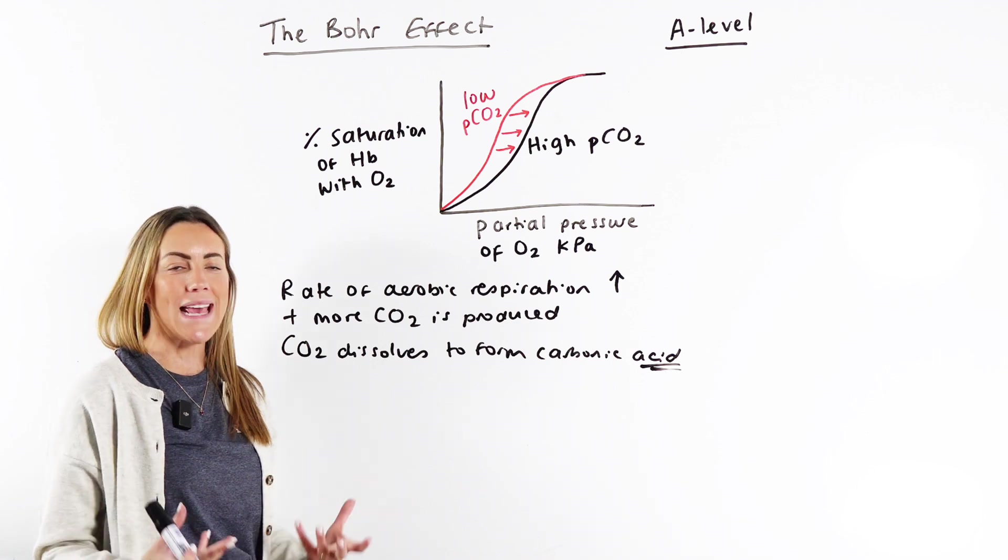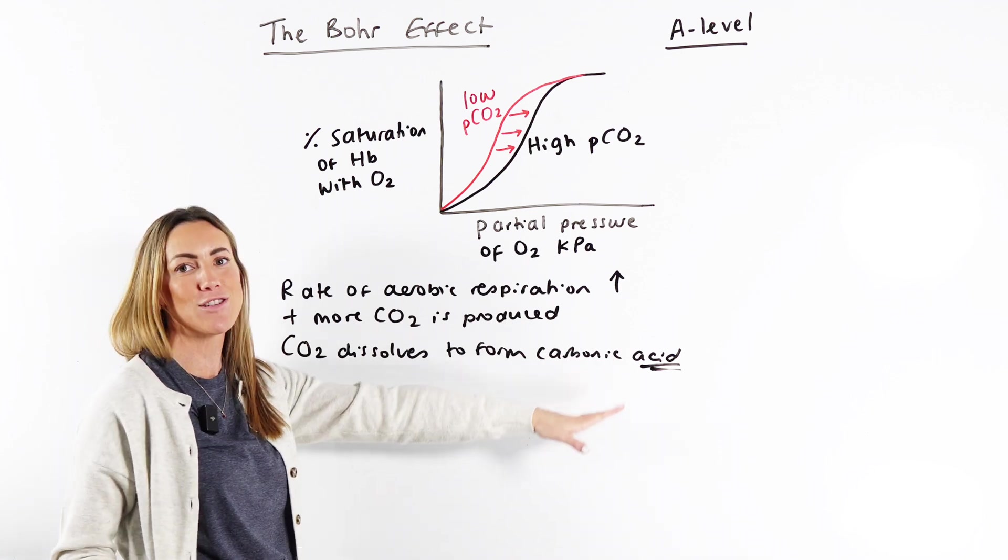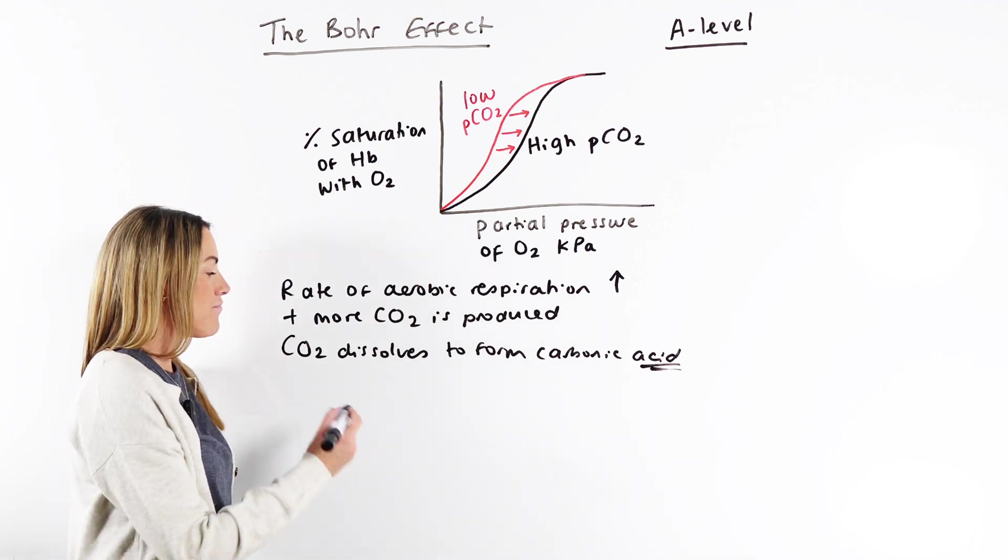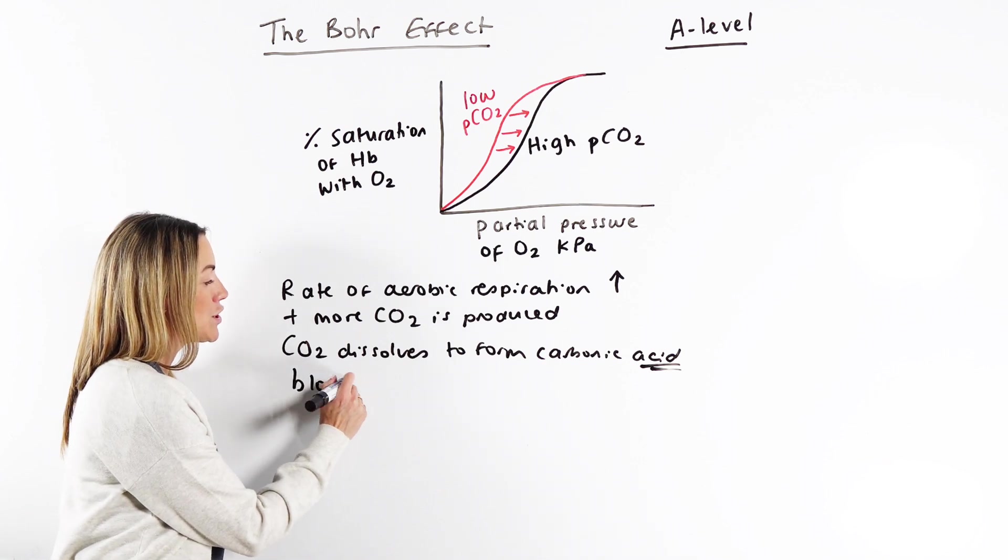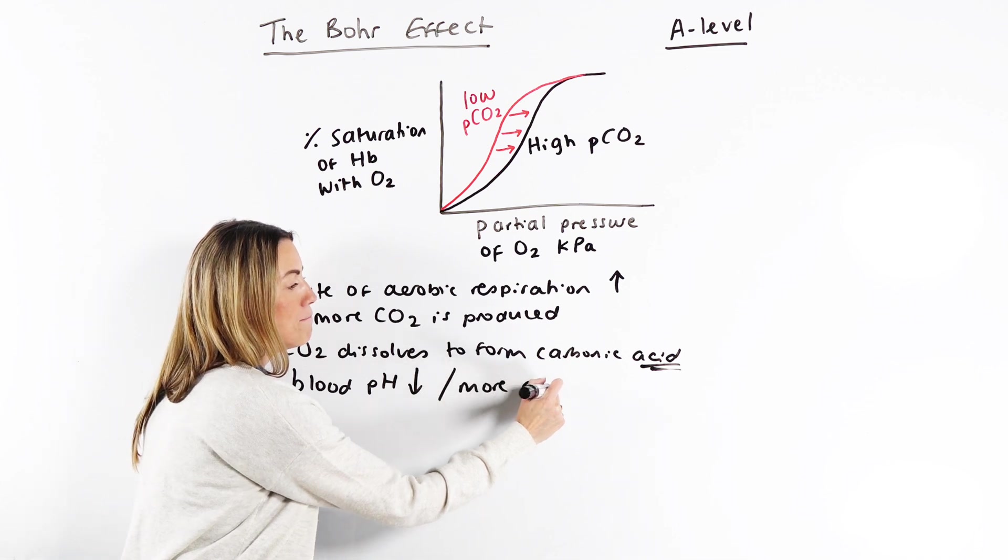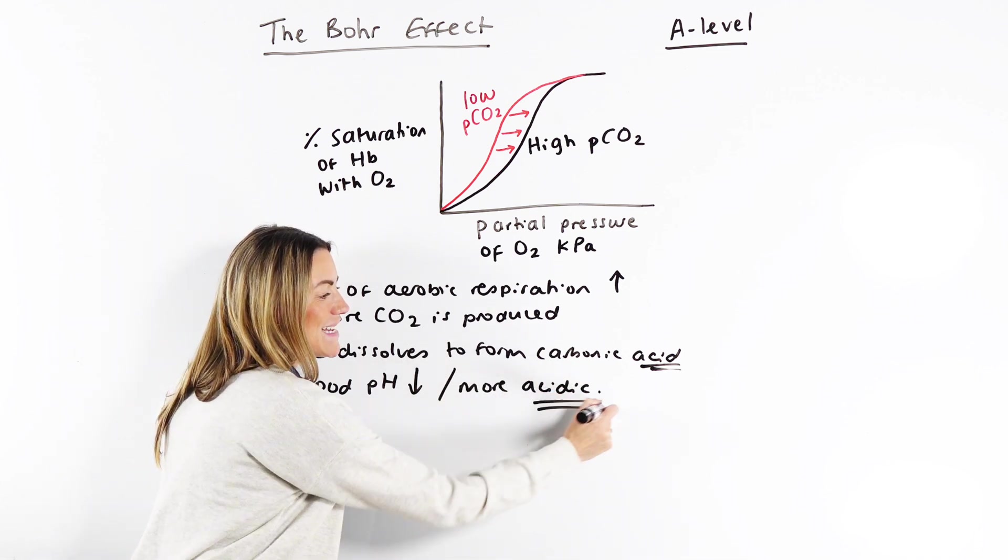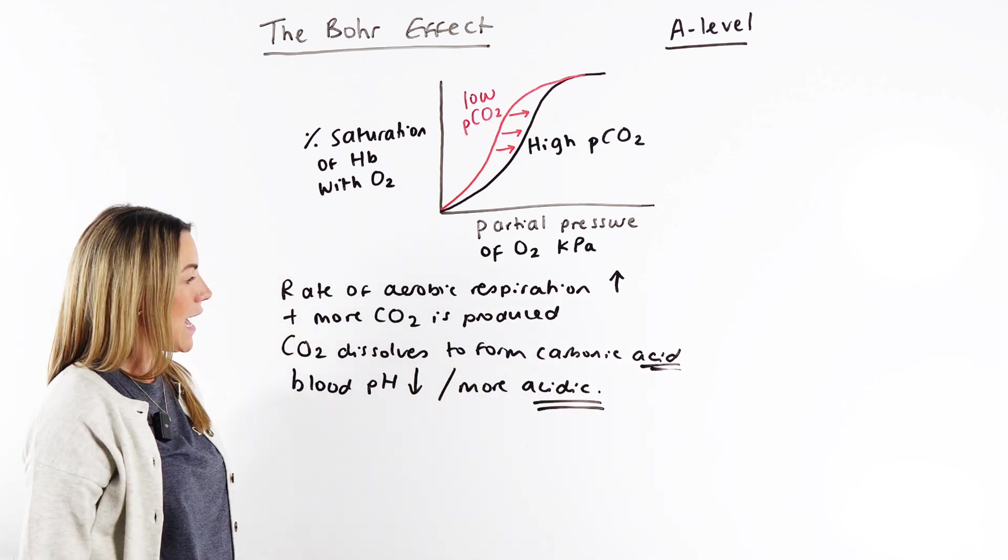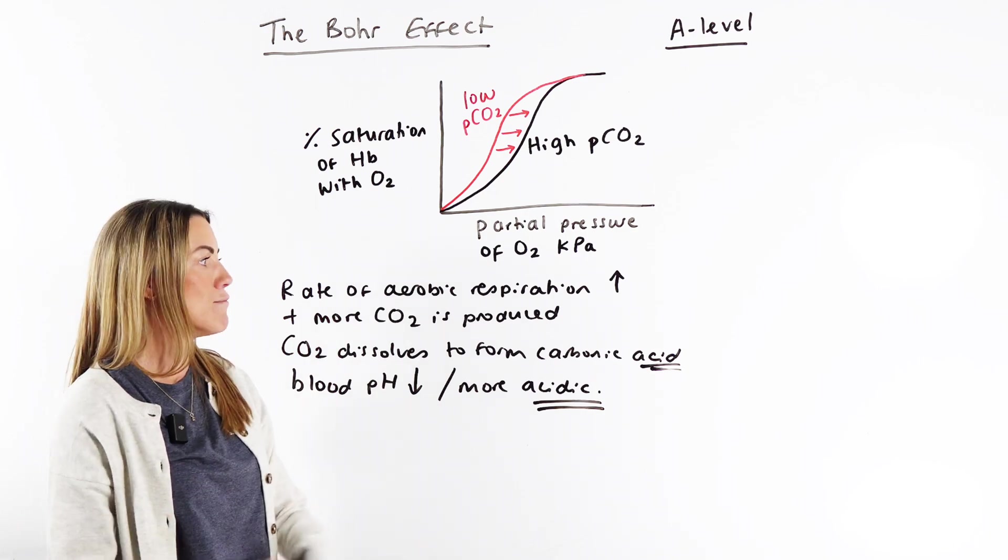What does that do to the pH? Well, the clue is here: carbonic acid. So obviously, the blood pH decreases, or you could say it becomes more acidic. A lower pH is obviously more acidic.